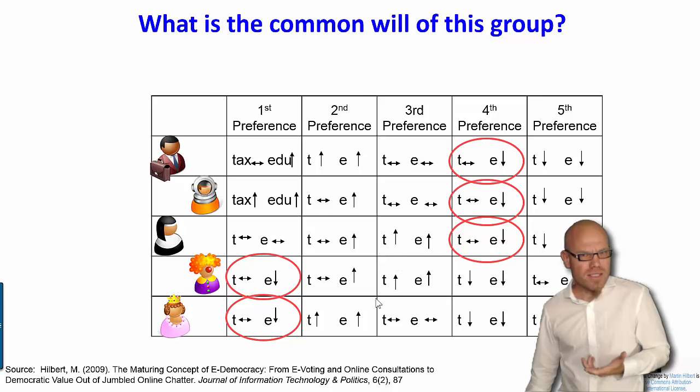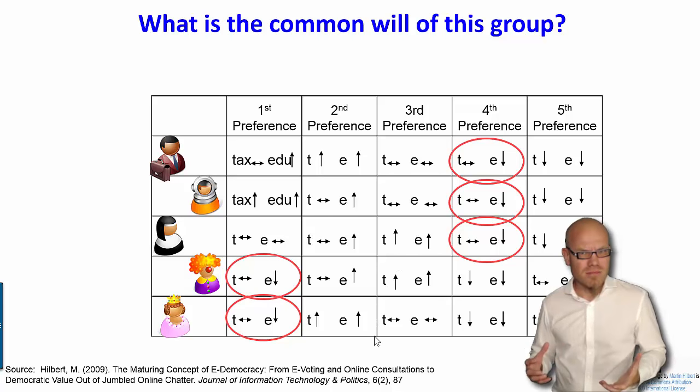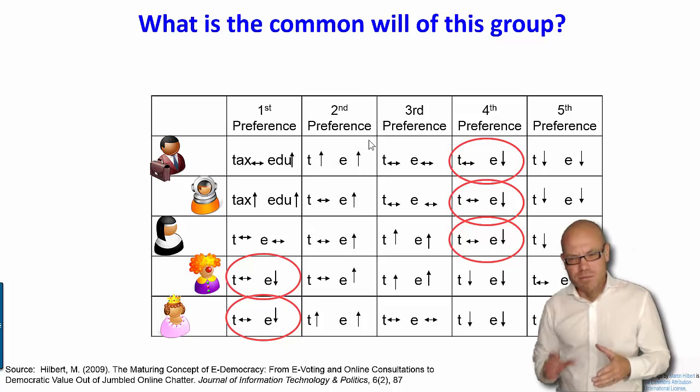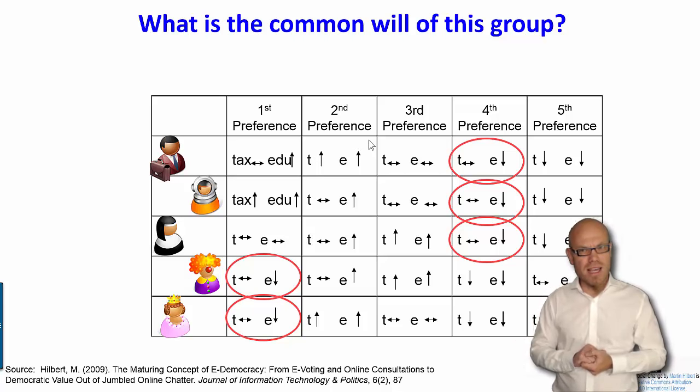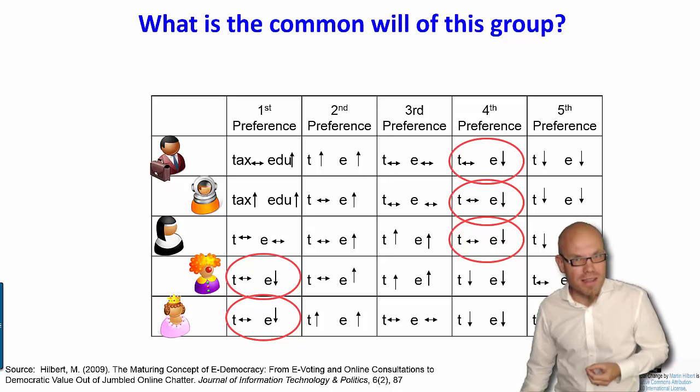Now, this creates a very unstable society, because these three, they will not like what is implemented after this first preference vote. The idea is, can we take advantage of more than just a simple yes-no vote and take advantage of all the different preferences people actually have? Can we somehow deal with that and find a compromise that everybody can live with?